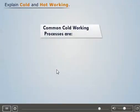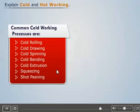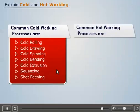Some of the common cold working processes are cold rolling, cold drawing, cold spinning, cold bending, cold extrusion, squeezing, and shot peening. Common hot working processes include hot rolling, hot drawing, hot spinning, hot extrusion, and hot forging.